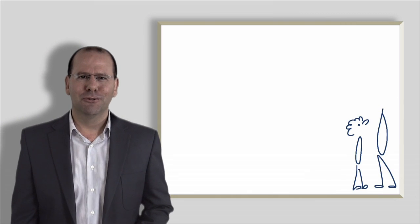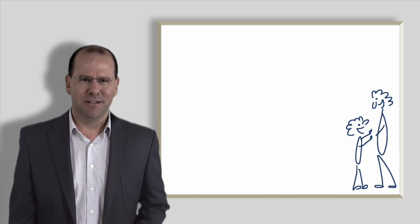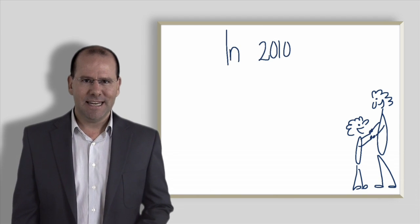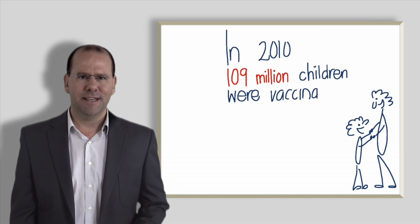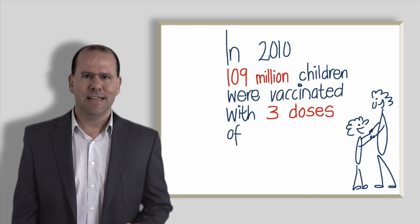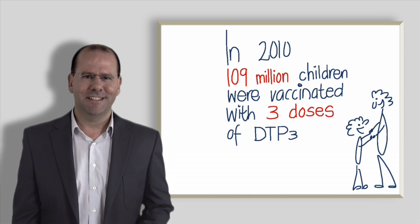Fact number two. More children than ever are being reached with immunization today. In 2010, an estimated 109 million children under the age of one were vaccinated with three doses of the diphtheria, tetanus, pertussis, which is the DTP3 vaccine.